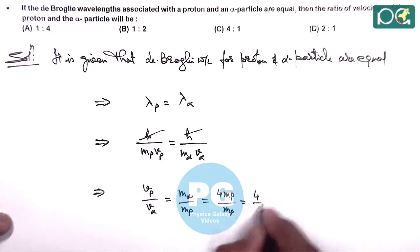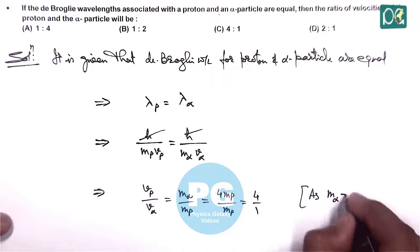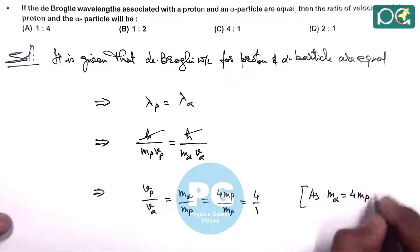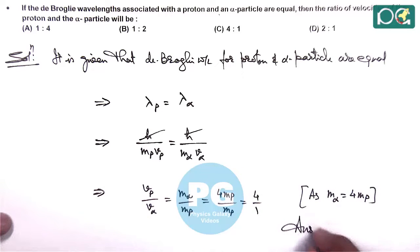This gives us 4/1. Here we have used that mass of alpha equals four times that of proton. So this matches option C, and the answer to this question is option C.